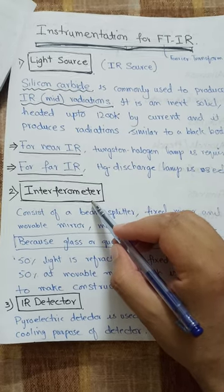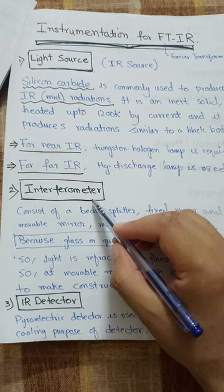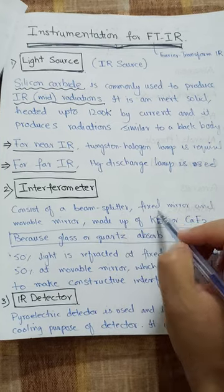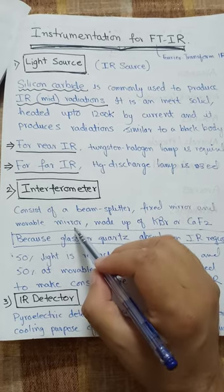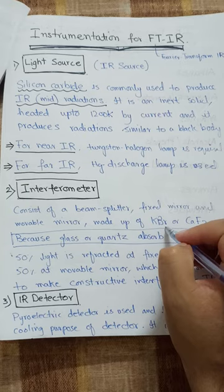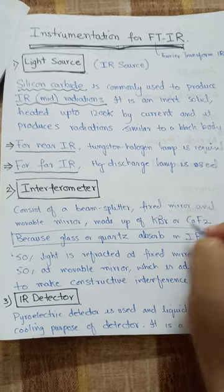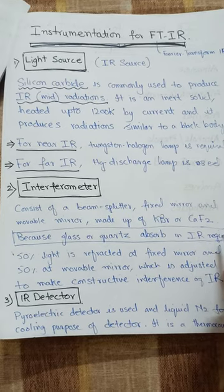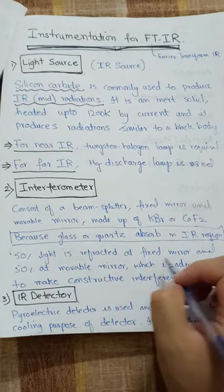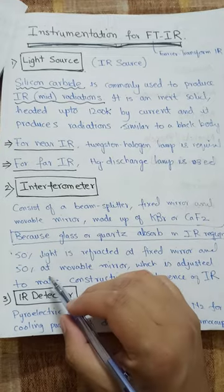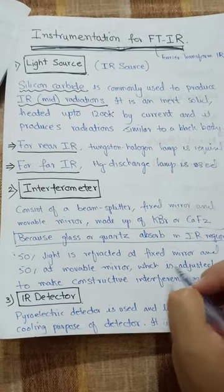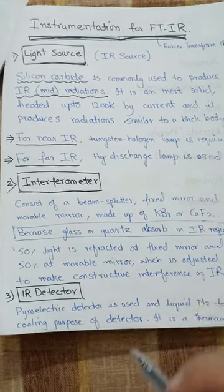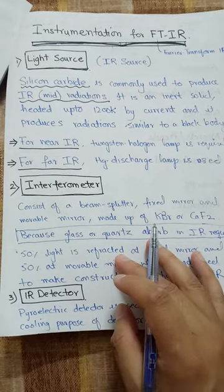The interferometer is used to make constructive interference of the IR radiation. It consists of a beam splitter, a fixed mirror, and a movable mirror. These are made of potassium bromide or calcium fluoride, because glass or quartz absorbs IR radiation. Fifty percent of the light is reflected at the fixed mirror and 50% at the movable mirror, which is adjusted so that constructive interference is produced.